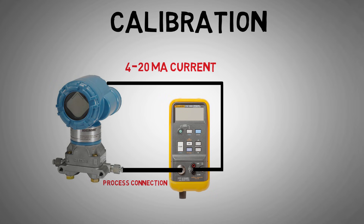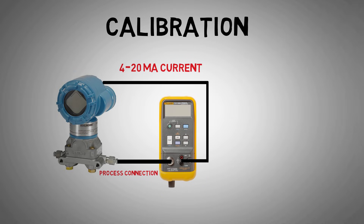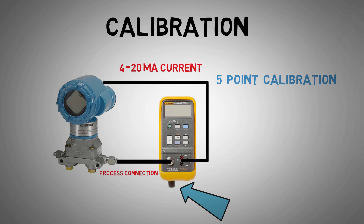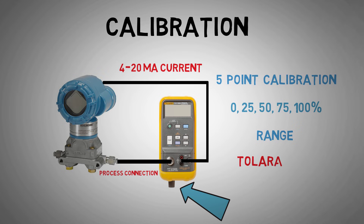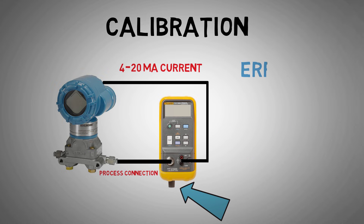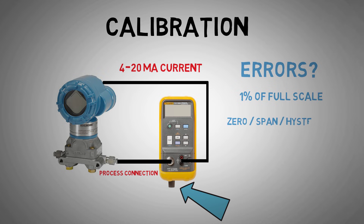This is what the control system is converting to a reading for our process operator. We would then apply various test pressures along the range of the transmitter and record the values on a calibration certificate. In a 5-point calibration, we will often be testing 0, 25, 50, 75 and 100% of the range of our transmitter. We would work out if the transmitter is within the required accuracy — something like 1% of range maximum error is usual for general purpose pressure transmitters. We would also check for zero, span and hysteresis errors.